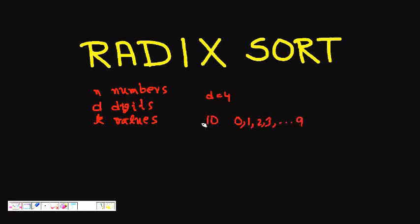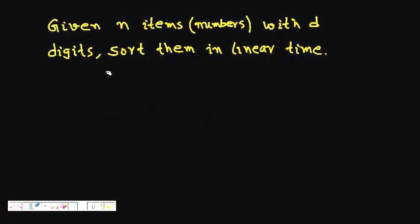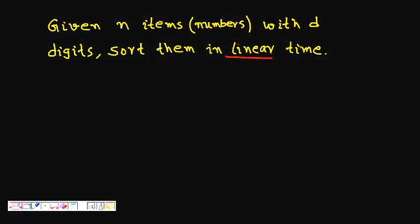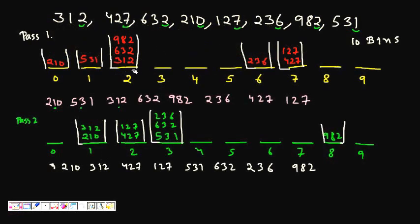So the problem statement is: given n numbers where each number is of d digits, we have to sort them in linear time. This is the beauty of Radix Sort — we can sort the array in linear time.